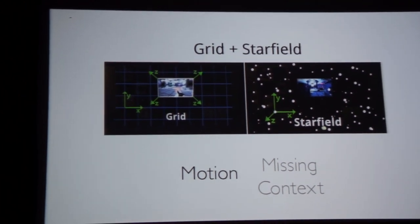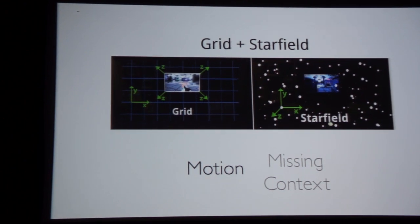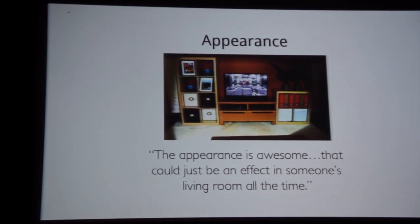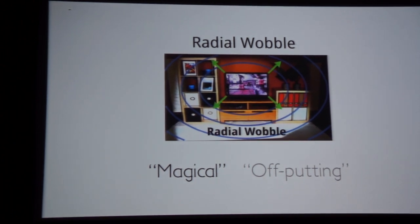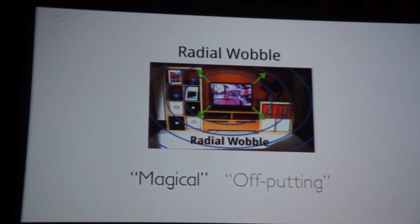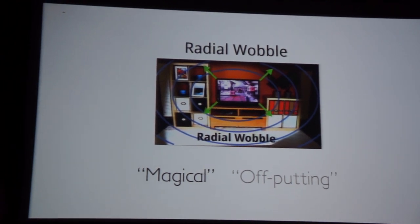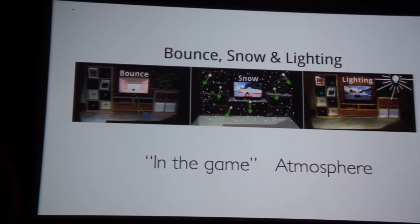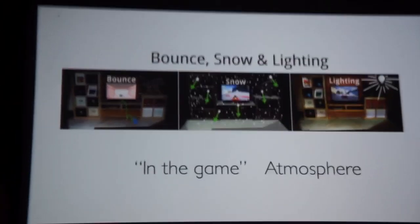The grid and star field illusions imparted a great sense of motion, but didn't provide additional game content or information, being independent of the underlying game. Some users preferred focus plus context illusions to get extra game information as well. The appearance illusion worked very well — one user saying it could just be in their living room all the time, even when a game's not playing. Radial wobble was a magical effect but could be off-putting, so it should be used for special emphasis only. Participants liked the interplay of physical and virtual in the snow and lighting illusions, creating atmosphere, though these work best when closely tied to game content.